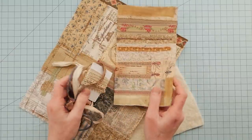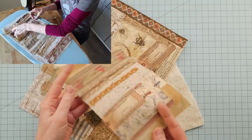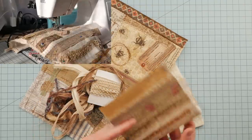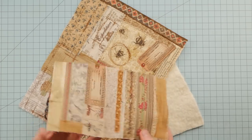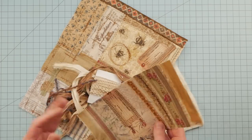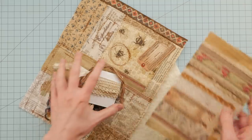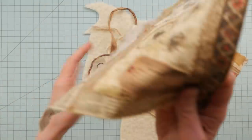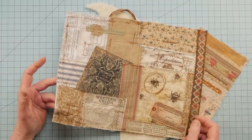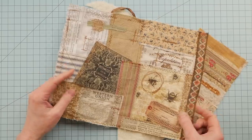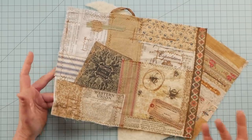You may recall, if you've been with me a minute, the quick and dirty snippet roll method. And this is a piece of fabric that I created in that method that I haven't cut into snippet pieces yet. And this is another piece that I created, but it's more of a fabric collage, not really a snippet anything.